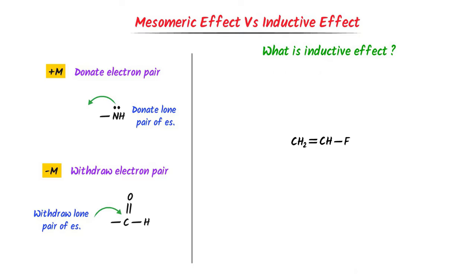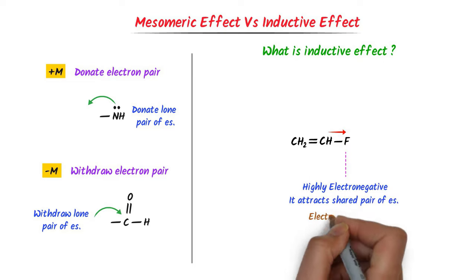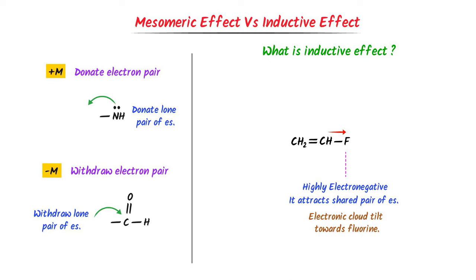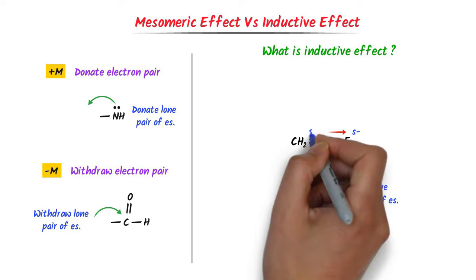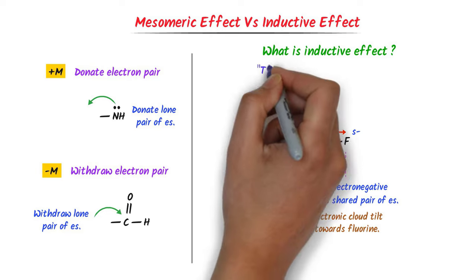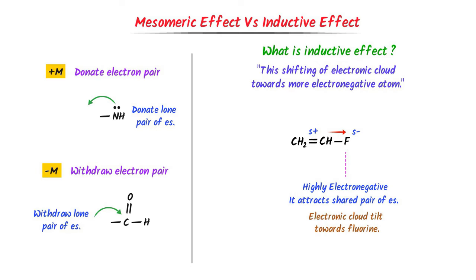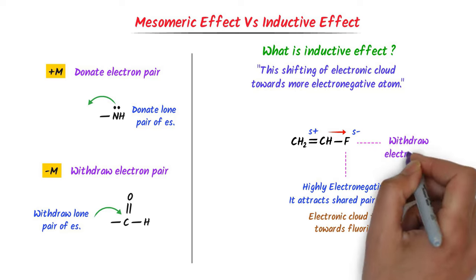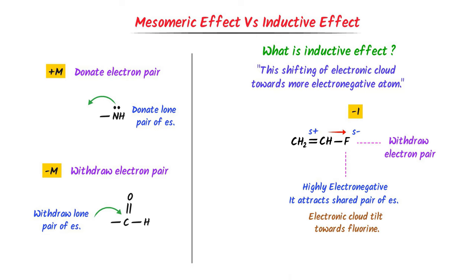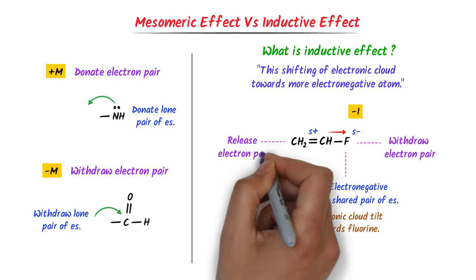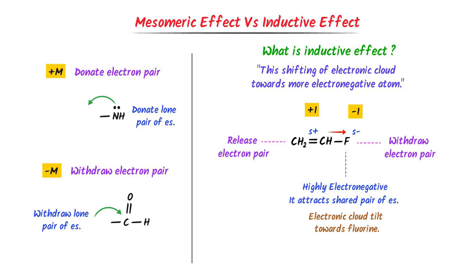Now consider this organic compound. Fluorine is a highly electronegative atom — it will attract the shared pair of electrons towards itself. As a result, the electronic cloud tilts more towards fluorine. Hence, a partial negative charge appears on fluorine and a partial positive charge appears on the adjacent group. This shifting of the electronic cloud towards fluorine due to electronegativity is known as inductive effect. Here, fluorine is known as an electron-withdrawing group, represented by negative I.